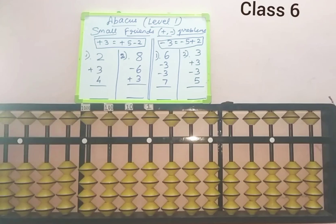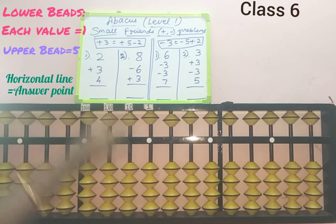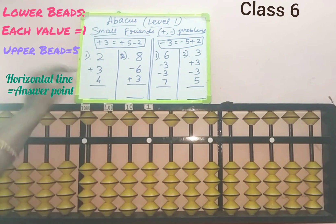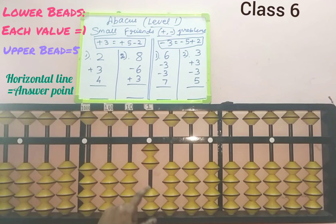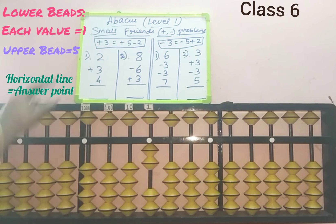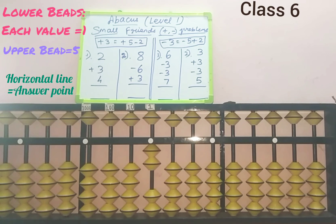Now let's see the first sum: 2 plus 3 plus 4. Add 2 in the ones slot since its place value is 1. In the lower part its value is 1, so add 2 beads touching the answer point — 2 is added. Next, from the second row I need to add 3 in the ones slot, but here only 2 beads are available, so we cannot add 3 directly.